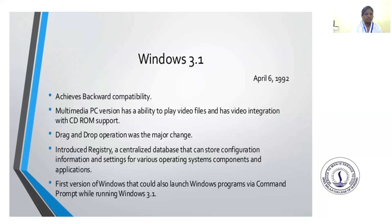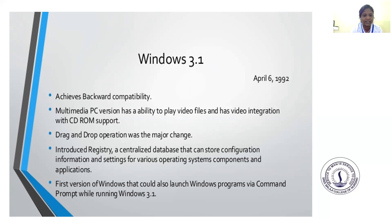Windows 3.1 was available on April 6, 1992. Its features include: background compatibility; multimedia support with the ability to play video files with CD-ROM support; drag and drop operations were a major change; introduced the registry — a centralized database that stores configuration information for various operating system components and applications; and it was the first version of Windows that could launch Windows programs via command prompt while running Windows 3.1.